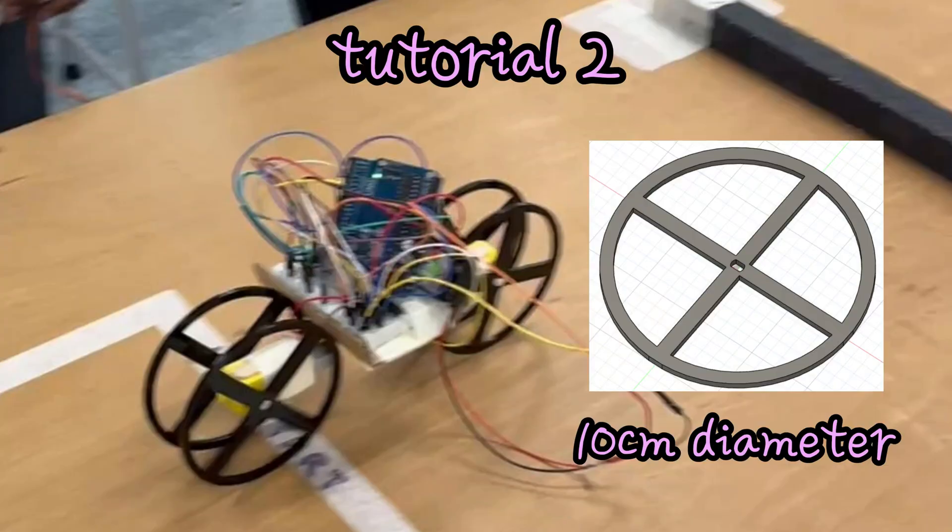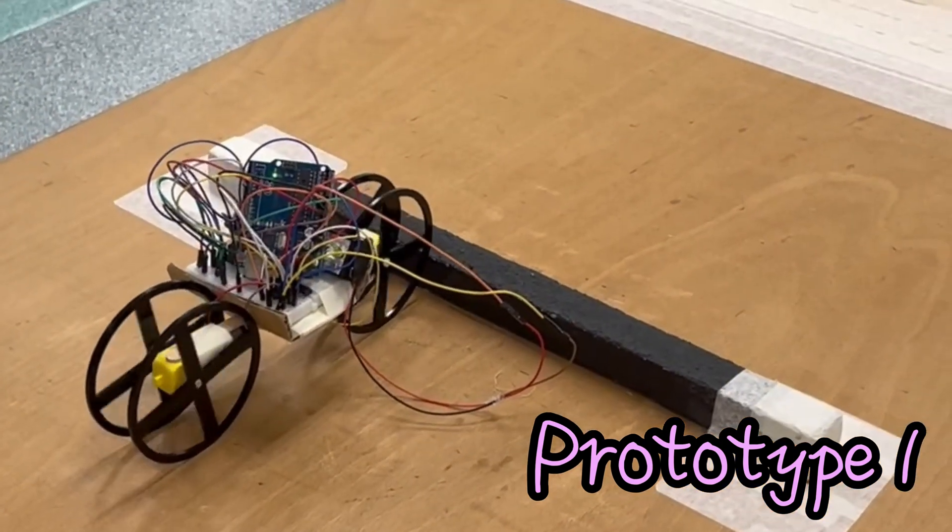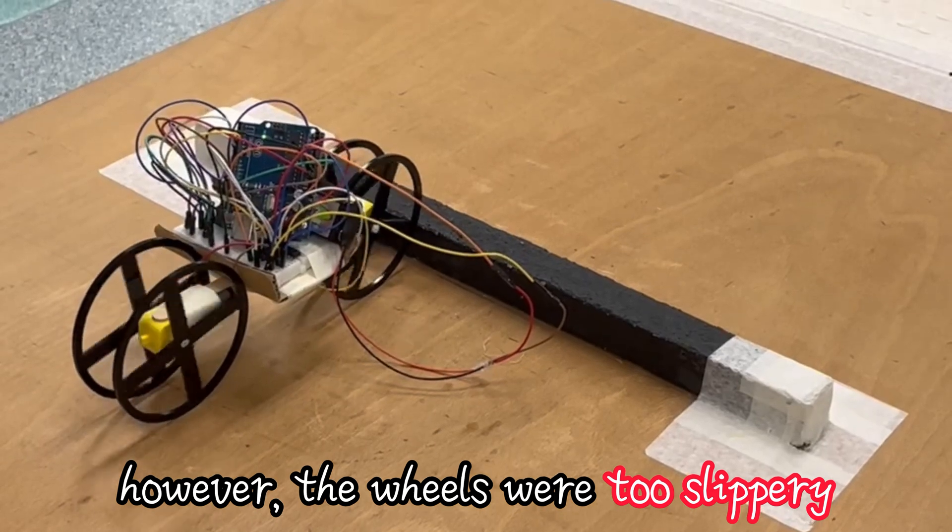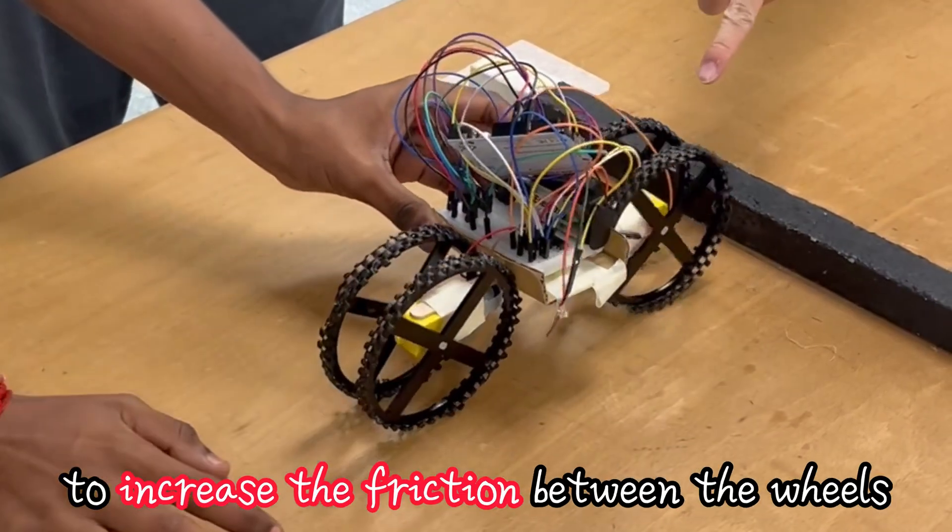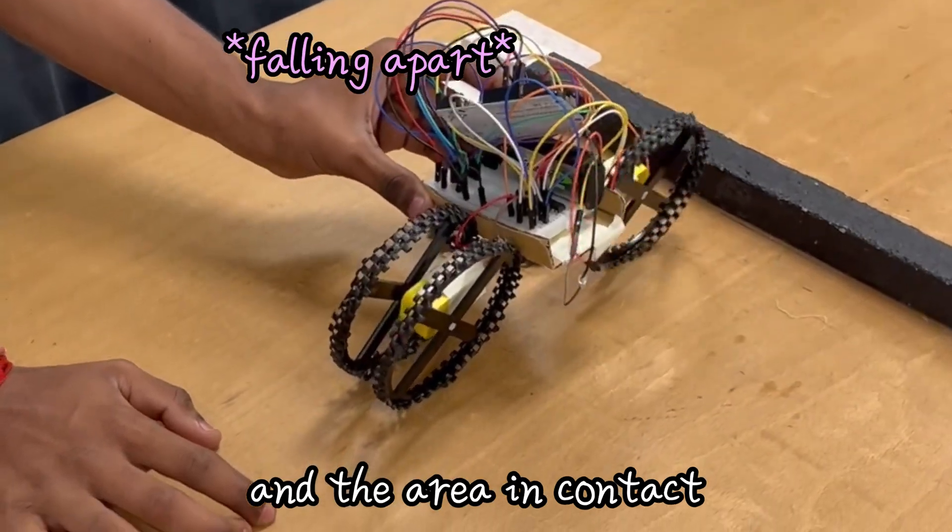By the second tutorial, we were able to laser cut and test wheels with much larger diameters, producing our first prototype with two motors. However, the wheels were too slippery, so we attached some anti-slip mats to increase the friction between the wheels and the area in contact.